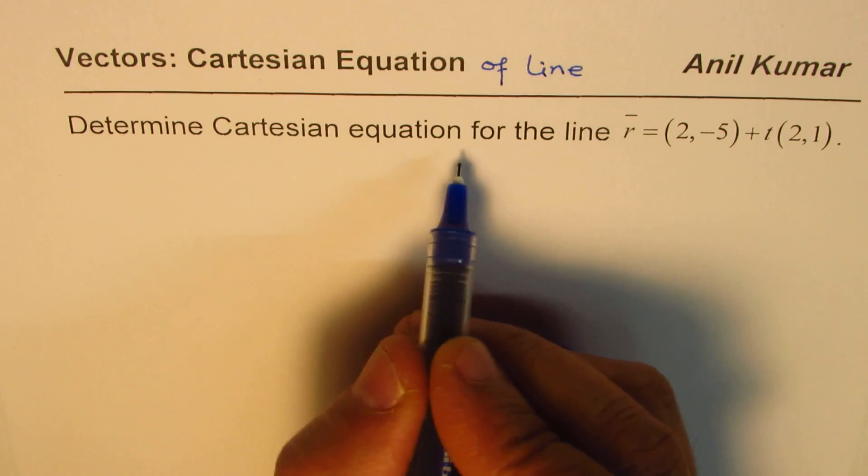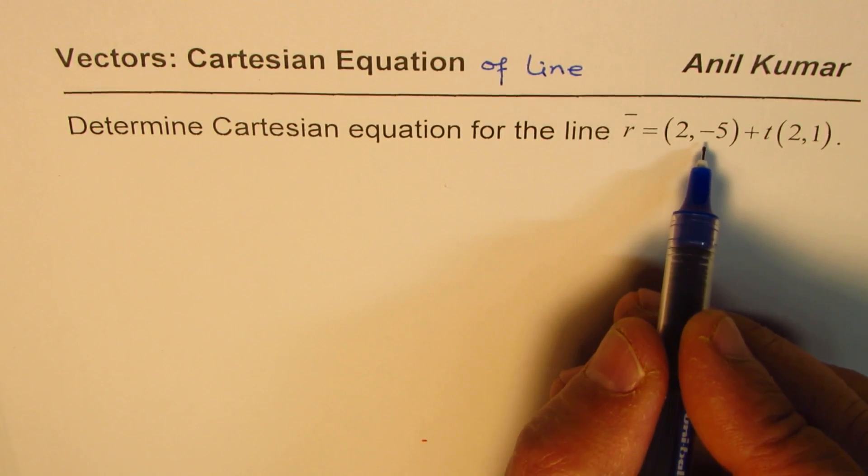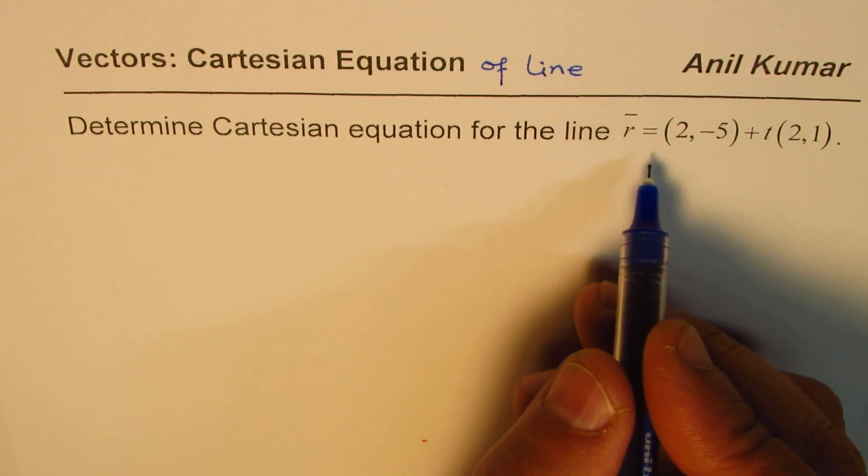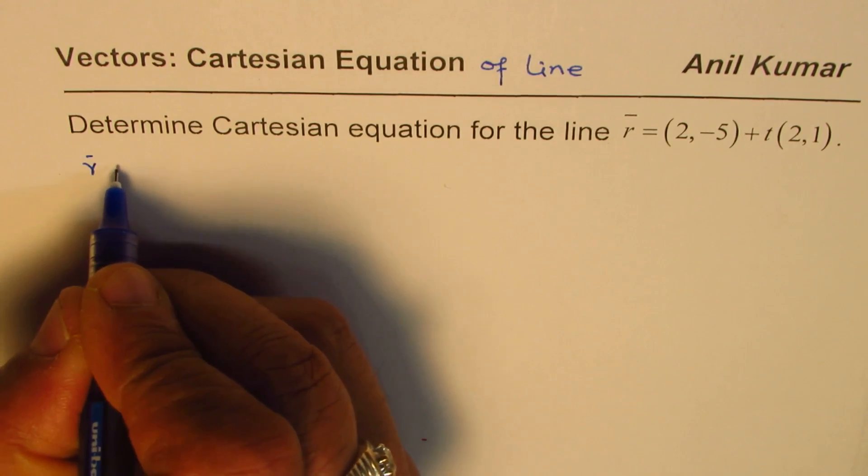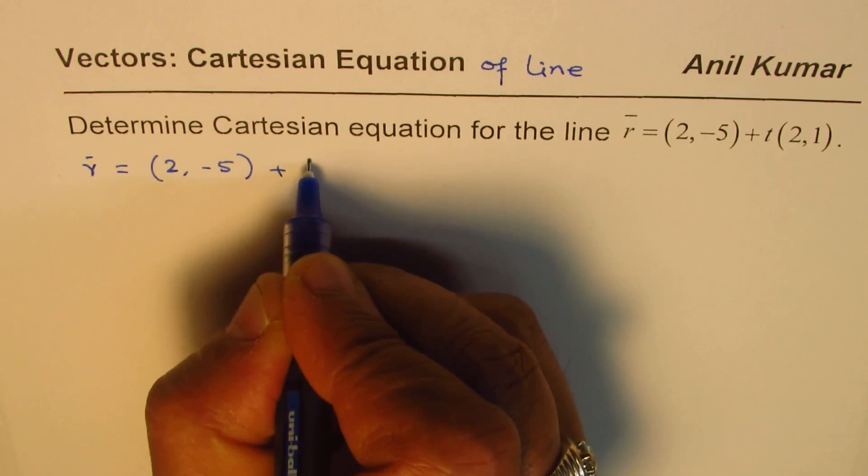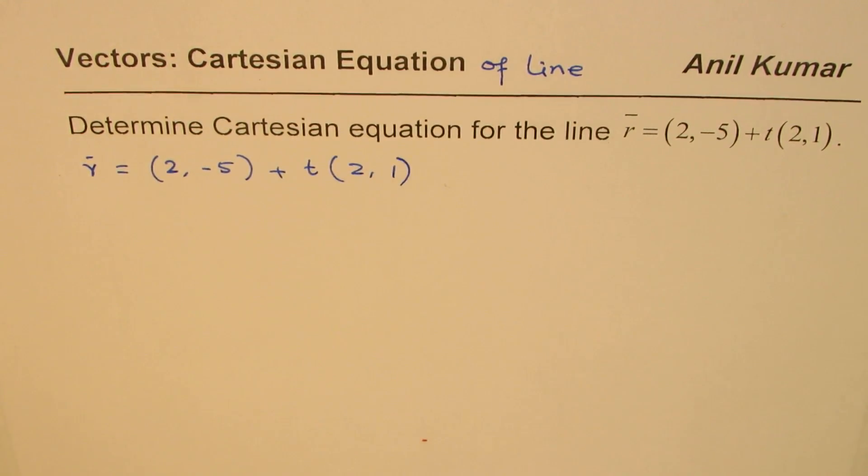Question is, determine Cartesian equation for the line r equals 2, -5 plus t times 2, 1. So in this equation, what is given to us? If I write r as equal to 2, -5 plus t times 2 comma 1, we are given two things.